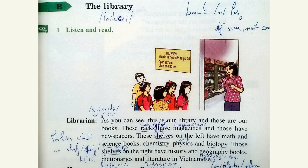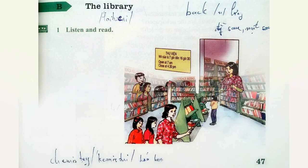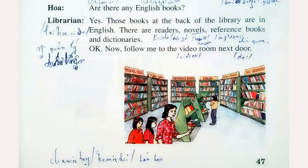These shelves on the left have math and science books — chemistry, physics, and biology. Those shelves on the right have history and geography books, dictionaries and literature in Vietnamese. Are there any English books? Yes — those books at the back of the library are in English. There are readers, novels, reference books, and dictionaries.